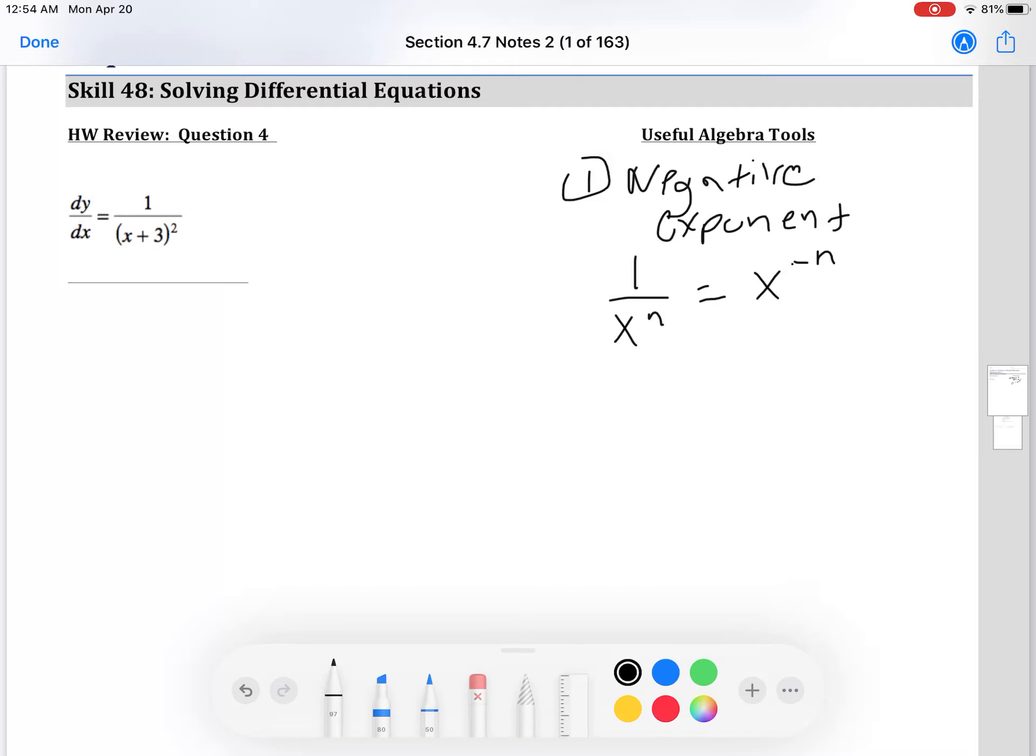So let's actually take a look at the example for homework question number four. We can write this as x plus three to the negative two.